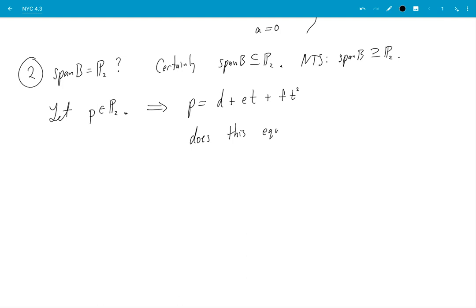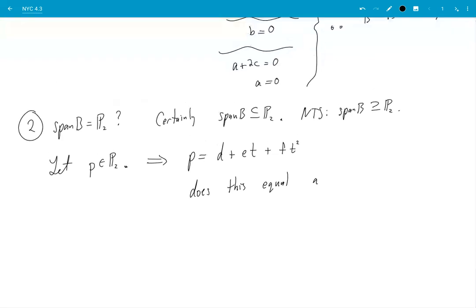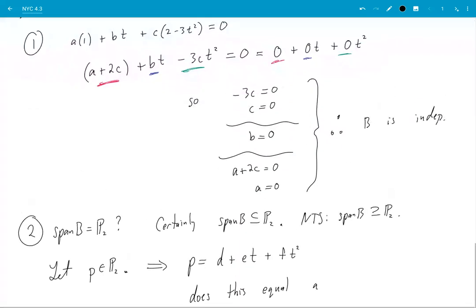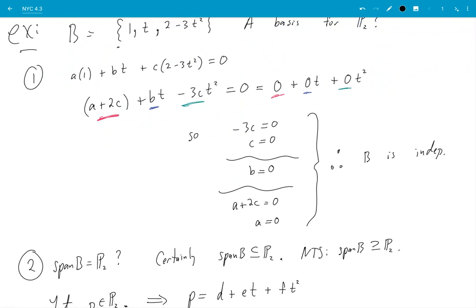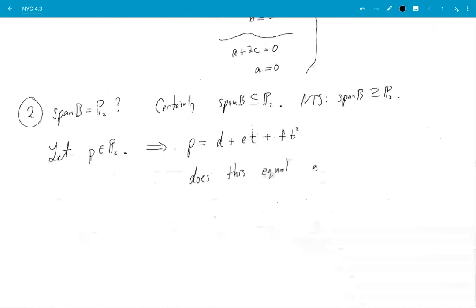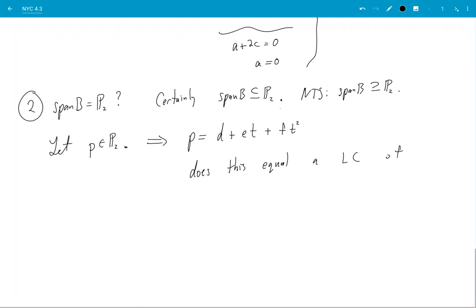Now does this equal—I want to see if this is in the span right. I want to see if this item is in the span of b. What is b? B is this set here. So I want to see does my p down here does it equal a linear combination of these guys. So I try to sort that out.